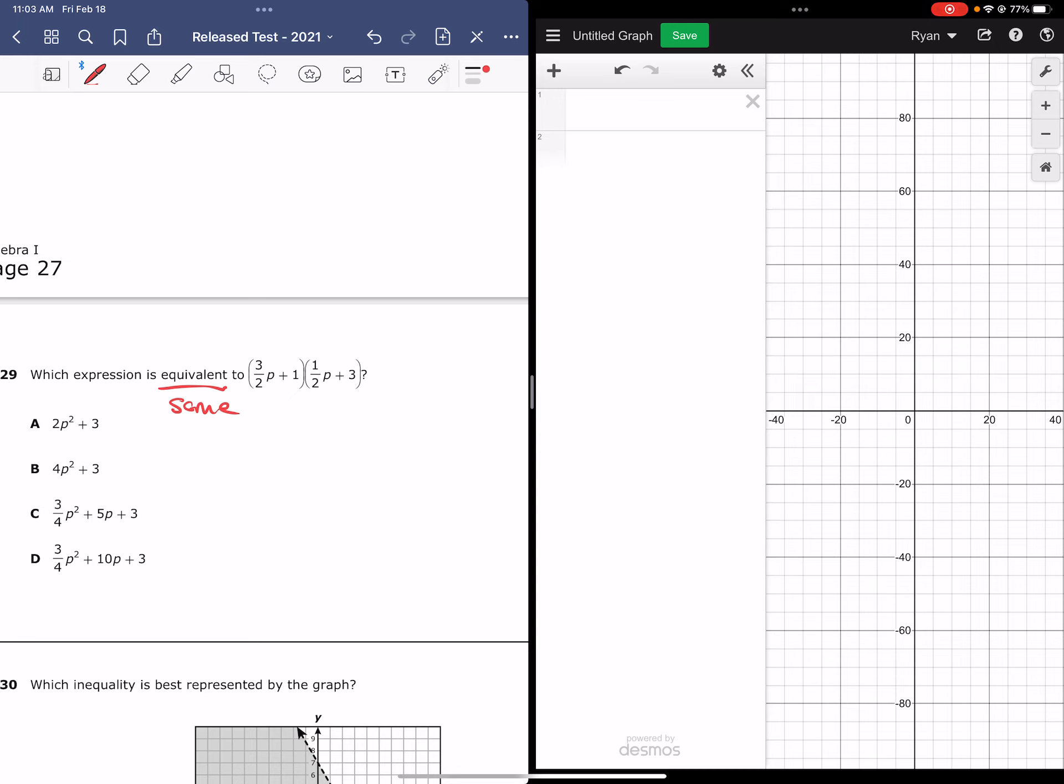We can do this in Desmos by comparing the graphs of the given expression and the ones in the four answer choices. But before we do that, we need to replace every p with an x and make sure that in Desmos we are always typing an x in place of p.